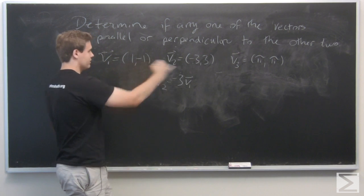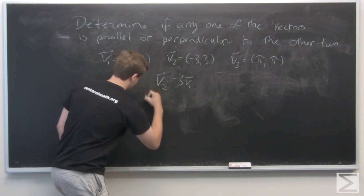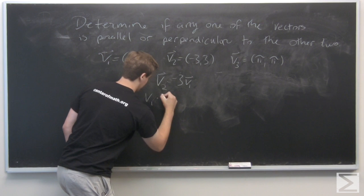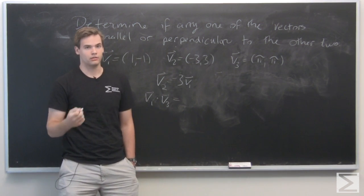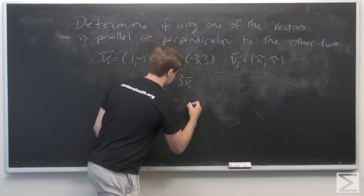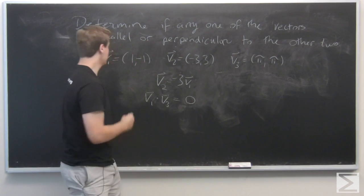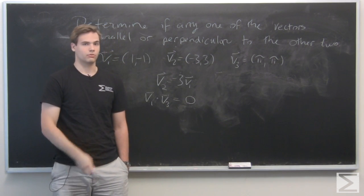We test v1 dot v3, and in fact, we see that this is just π - π, which is equal to zero. So that means v1 is perpendicular to v3.